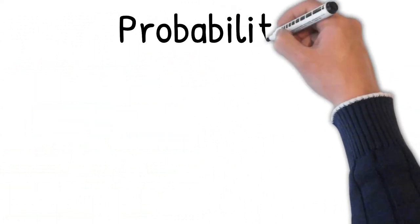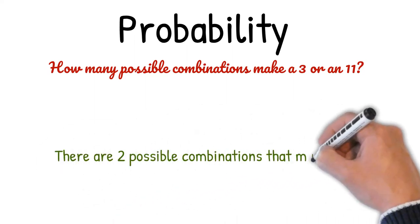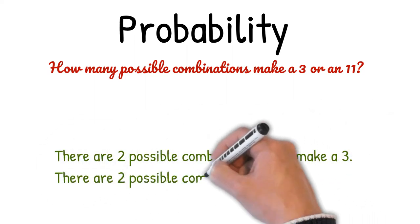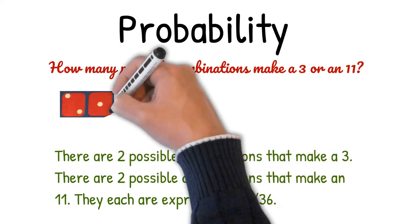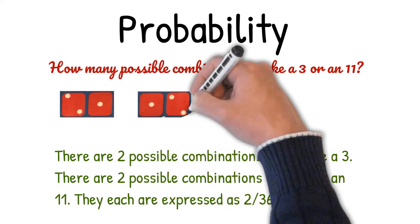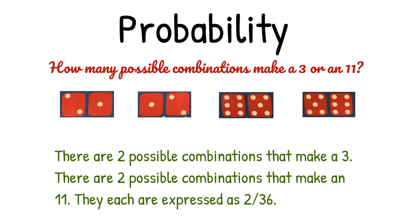How many possible combinations make a three or eleven? There are two possible combinations that make a three and two that make an eleven, each expressed as two out of thirty-six. The combinations that make a three are two-one and one-two. The combinations that make an eleven are six-five and five-six.